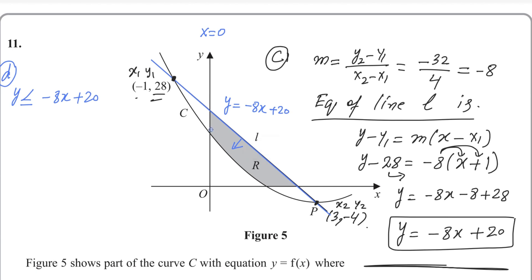For the y-axis: along the y-axis, x = 0, and the shaded region is to the right of this vertical line, so the second inequality is x ≥ 0. For the x-axis: the equation of the horizontal line is y = 0, and the shaded region is above it, so the third inequality is y ≥ 0.